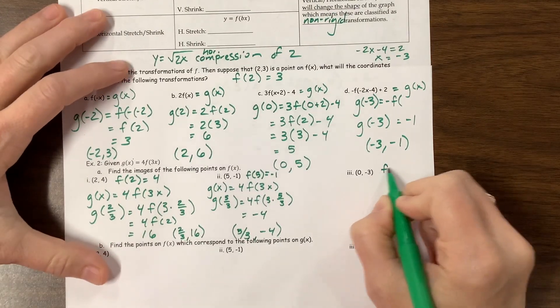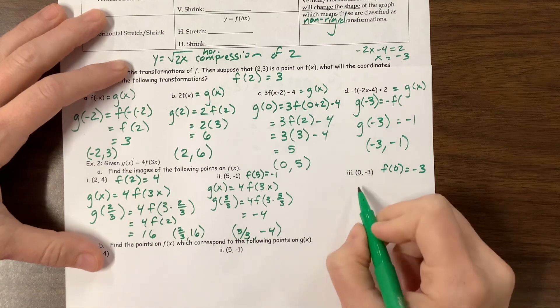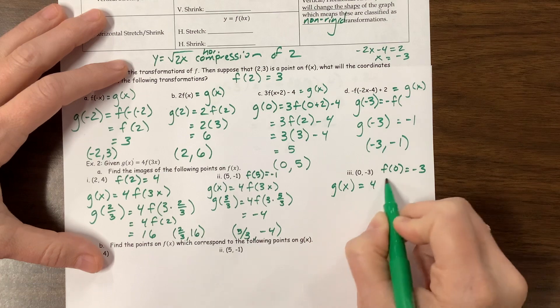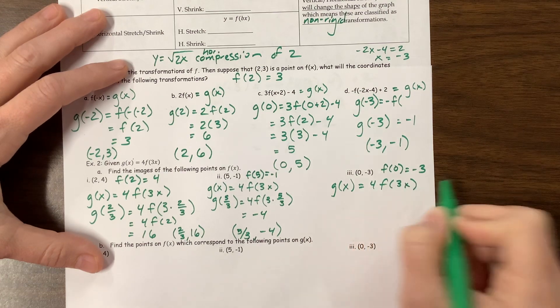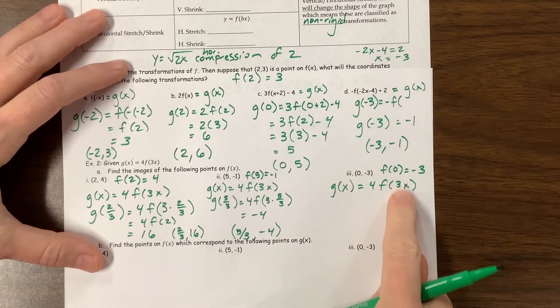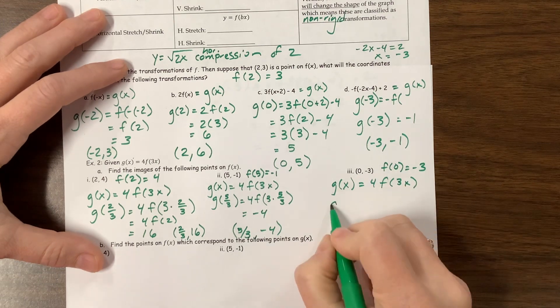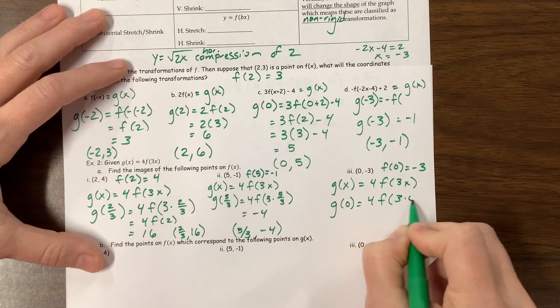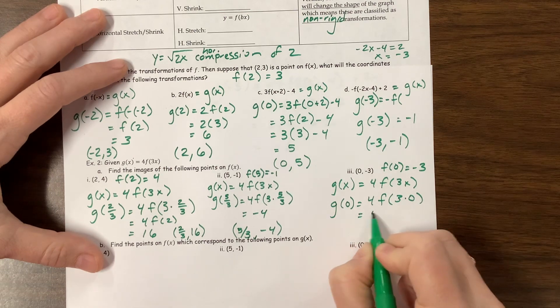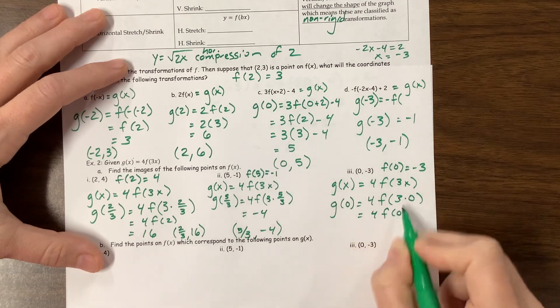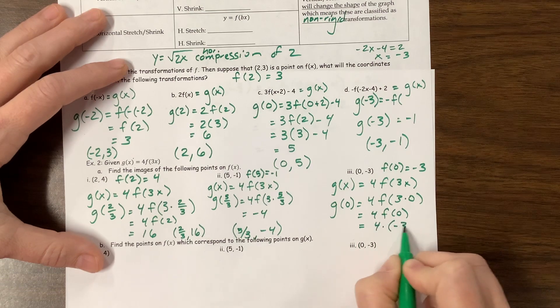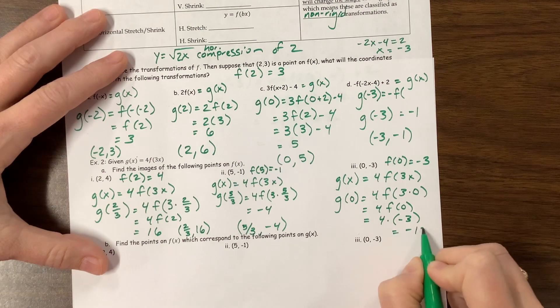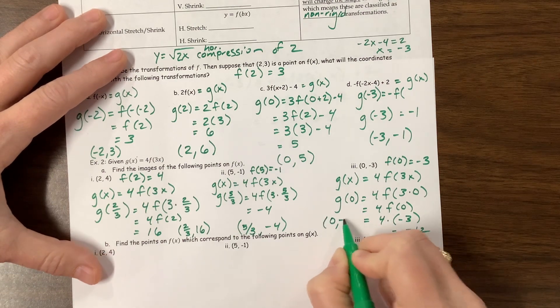Okay, f of 0 equals negative 3. So we have g of x is equal to 4 times f of 3x. So what do I need to plug in so that I can get a 0? Well, 0. So g of 0 is going to equal 4 times f of 3 times 0. 3 times 0 is 0. This is 4 times f of 0. We just said f of 0 is negative 3. 4 times negative 3. I don't know why I wrote all these dots in parentheses, but there you go, is equal to negative 12. So this is the point 0, negative 12.